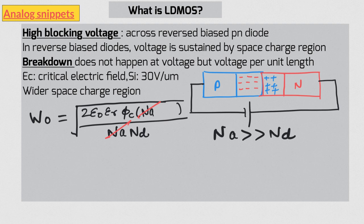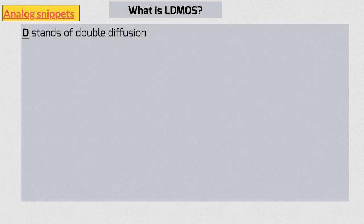Okay, now let's decode the letter D. D originally stood for double diffusion. To understand the origin of this term, we need to take a detour to vertical DMOS, or simply VDMOS.